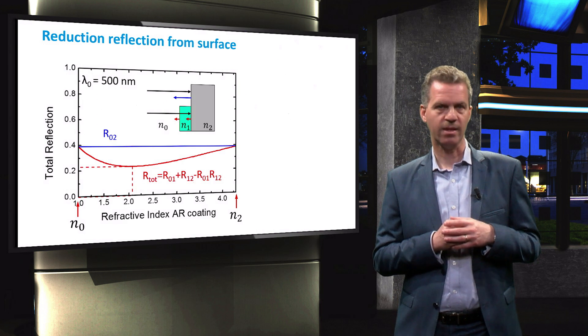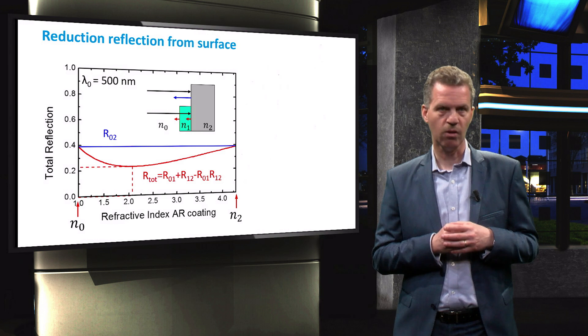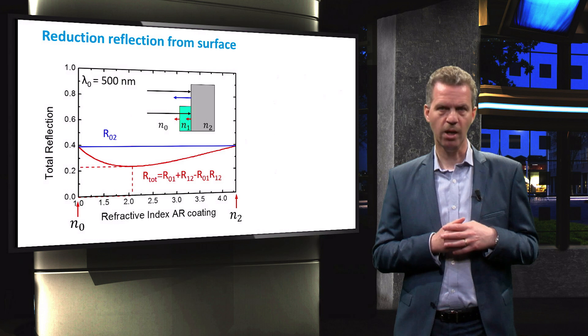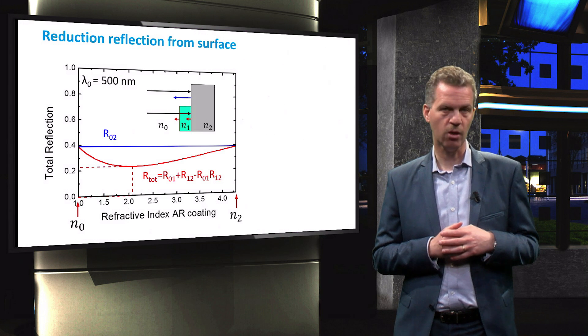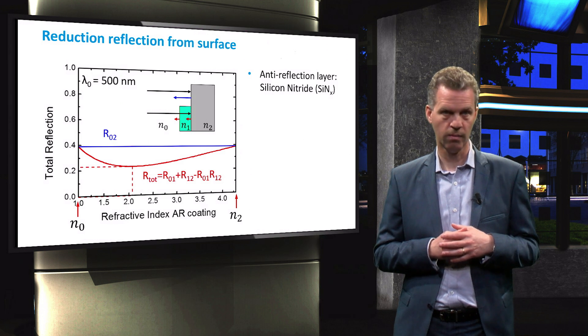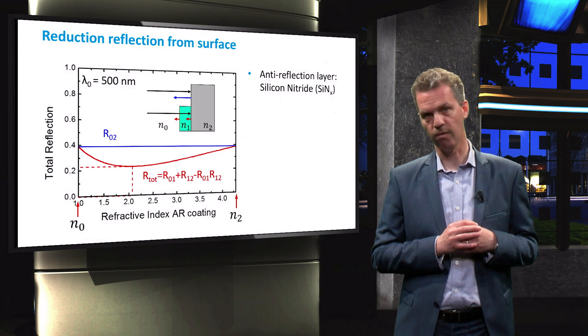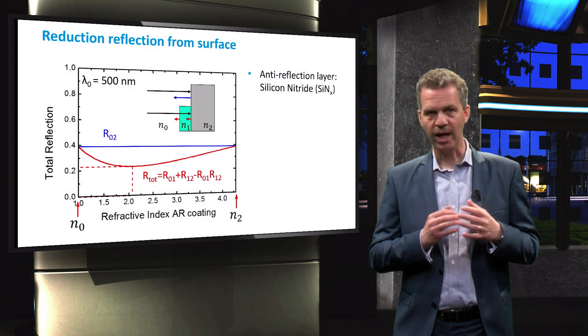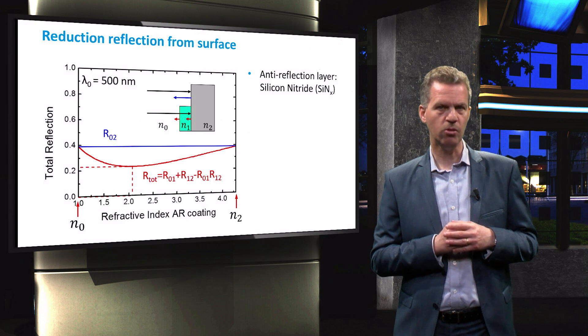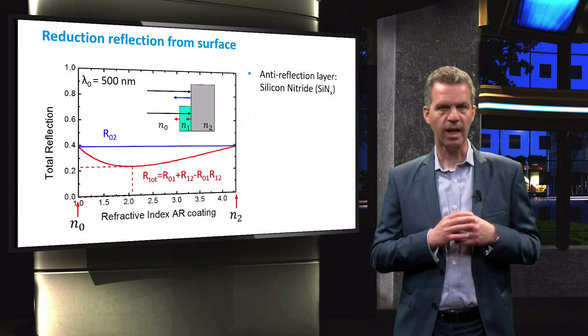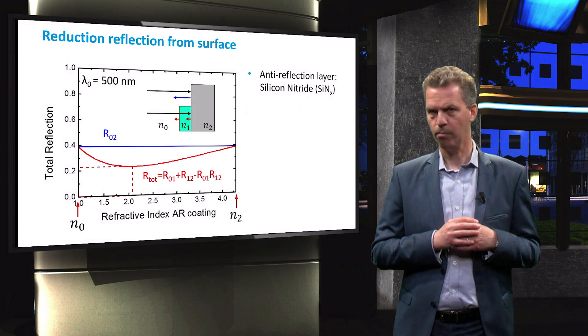We have seen that the optimal refractive index of the Rayleigh film is around 2.1. This is the reason why the most widely used material for this coating is silicon nitride. We have previously mentioned this material when we discussed front surface passivation. In that case, this layer was applied to reduce the recombination on the wafer surface. This layer will thus serve more than one purpose.